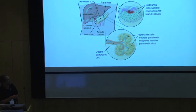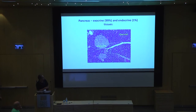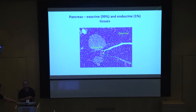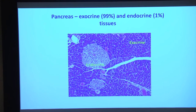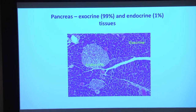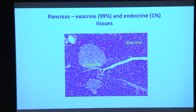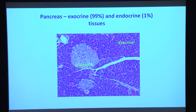Moving to the pancreas: this tissue is unique because it is actually two tissues intermingled into one — the exocrine and the endocrine pancreas. The exocrine pancreas takes up about 99% of the volume, and the endocrine pancreas about 1%. However, in terms of human health, the endocrine pancreas is responsible for diseases like diabetes that are far more prevalent than exocrine diseases like pancreatic tumors.